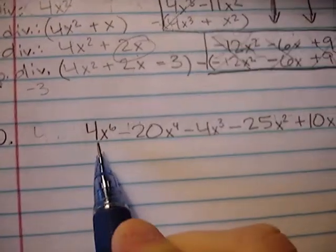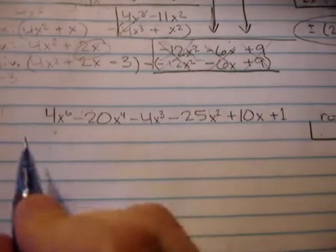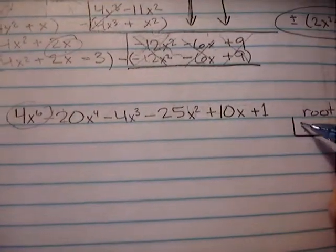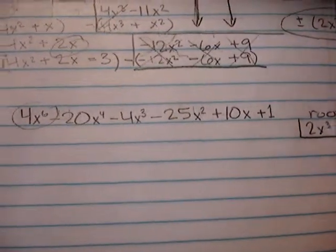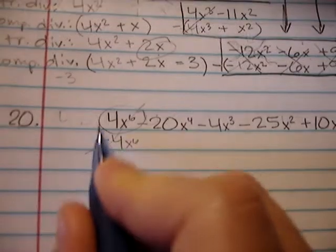All right, let's do problem 20. So for our first term in our answer, in our root, we're going to just take the root of this first term. 4x to the 6th, the root of that is 2x cubed. Now we're going to subtract this out of the problem and just kind of get it out of the way.